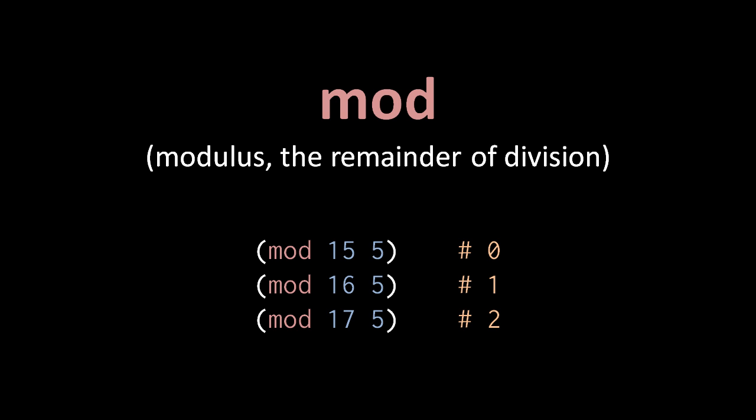The modulus operator, written mod, returns the remainder of division. So for example, mod 15 5, 15 divided by 5 is 3 with the remainder of 0, so this returns 0. But 16 divided by 5 is 3 with the remainder of 1, so 16 mod 3 returns 1. And mod 17 5 returns true because 17 divided by 5 is 3 with the remainder of 2.